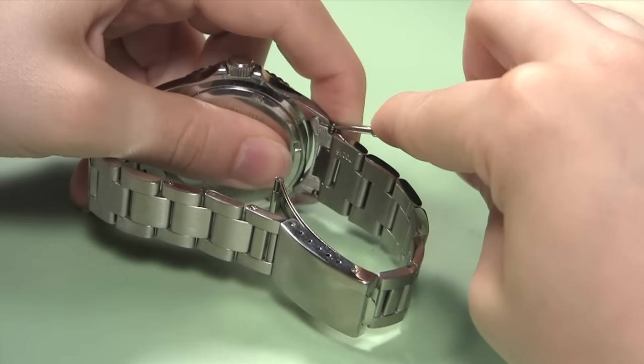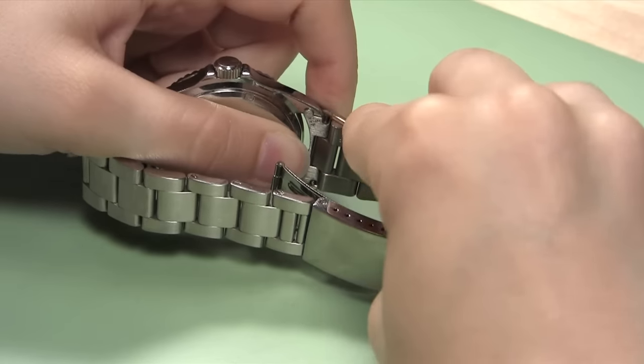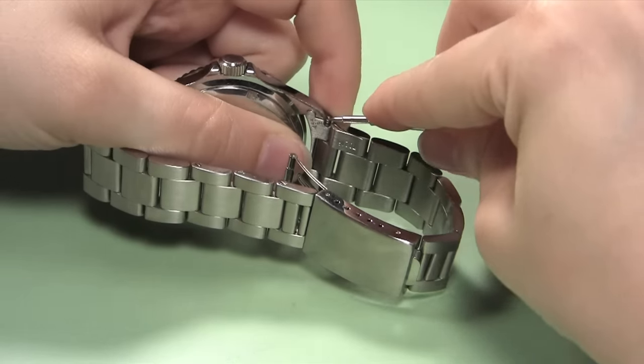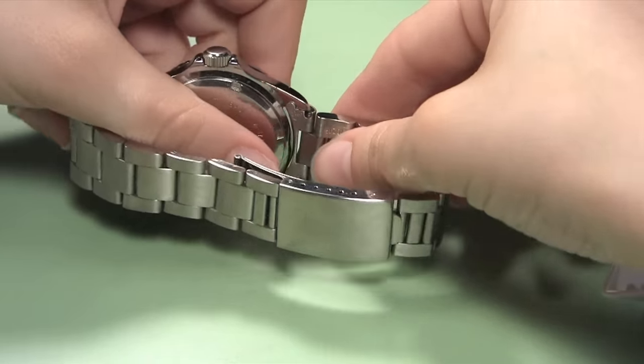Push down on the spring bar so that the end fits in the low point of the end piece. With the spring bar pushed down, slide it under the lug so that the end piece connects into place between the lugs and the spring bar can snap into the notch in the top lug.